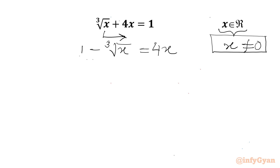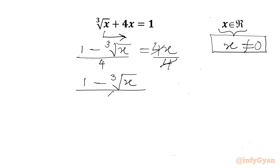Now we will divide both sides by 4. From RHS we will cancel 4 and 4 from numerator and denominator. We will get (1 minus cube root x) over 4 equal to x.